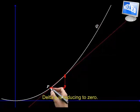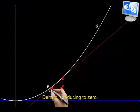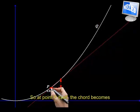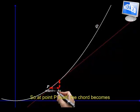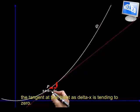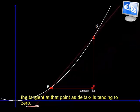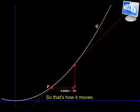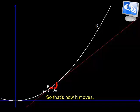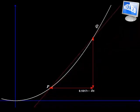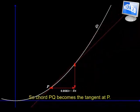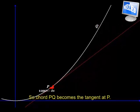Delta x is reducing to zero. So at point P itself, the chord becomes the tangent at point P. So that's how it moves. So chord PQ becomes the tangent at P.